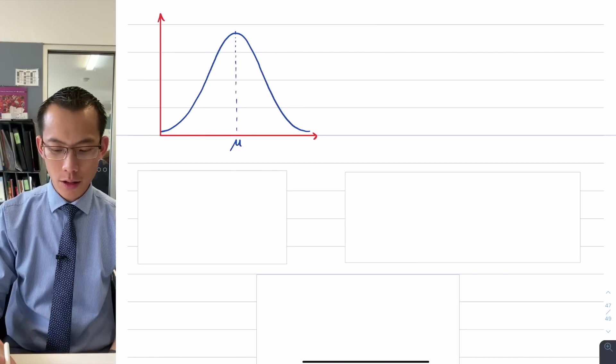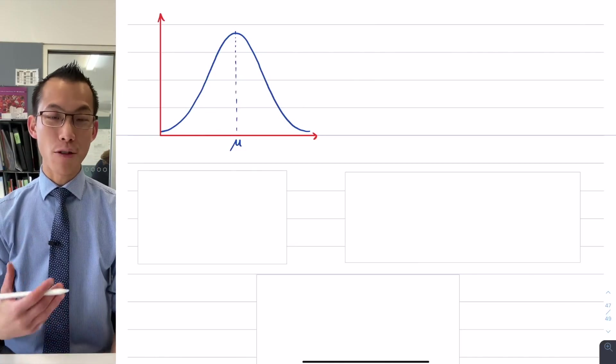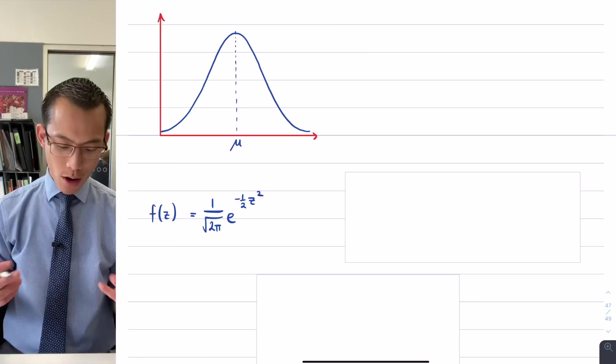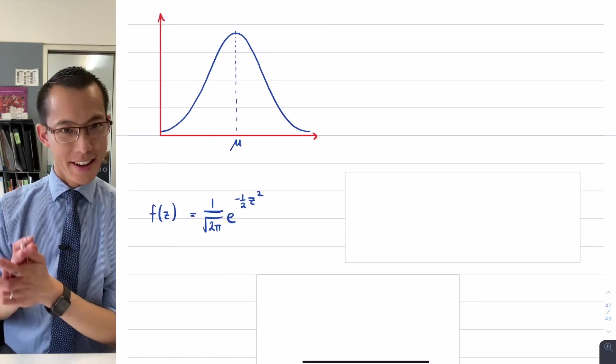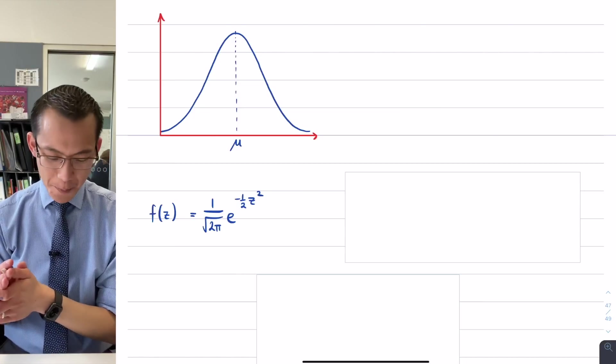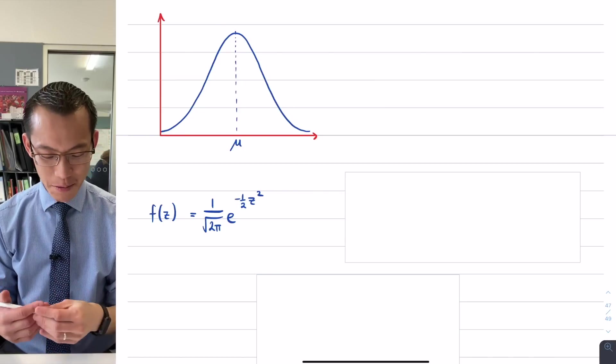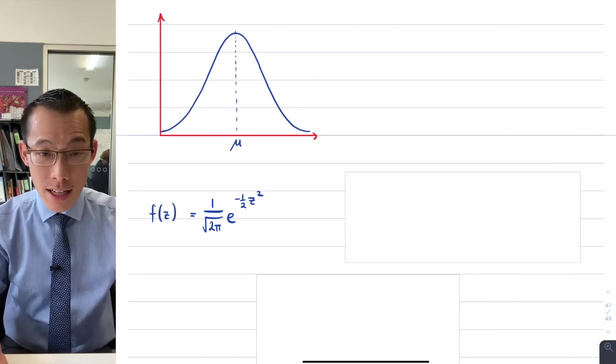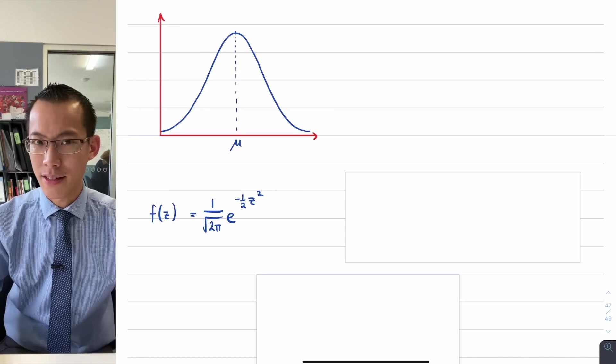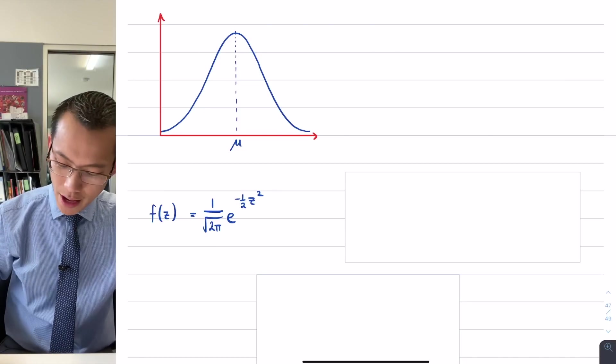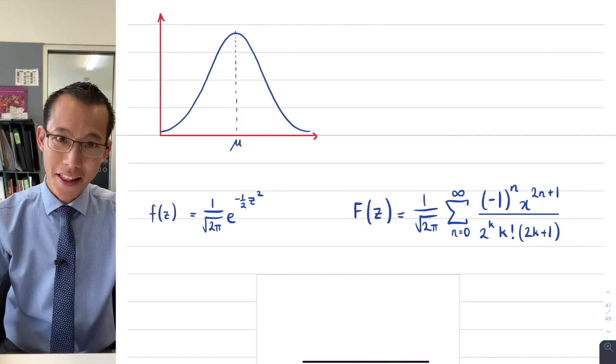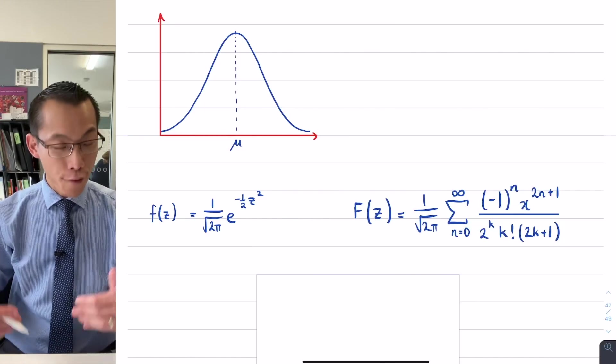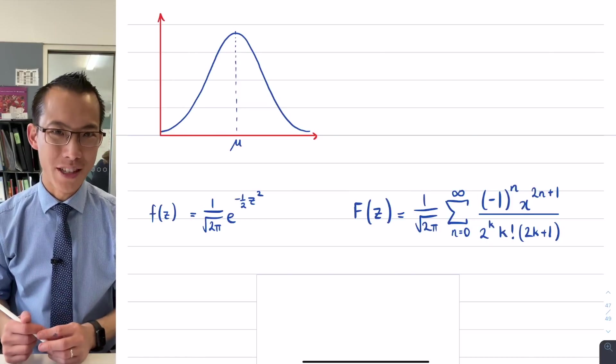The only problem was when we went through the effort of trying to understand what would be a graph that fits this particular function, we ended up with this function: one on root 2π, e to the negative a half z squared. We had to take some work to get there, and it was hard enough as it was before we realized that to take this function and then integrate it, because integrating probability density functions is kind of the primary thing we do to evaluate anything with them, you end up with something like this. This is the nightmare that you get when you try and evaluate the cumulative distribution function for the probability density function of the normal distribution.